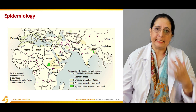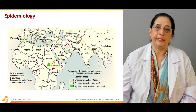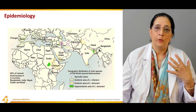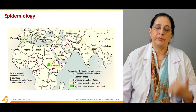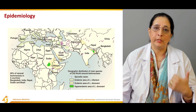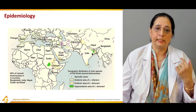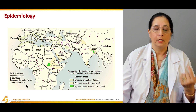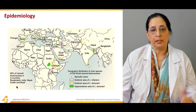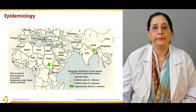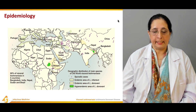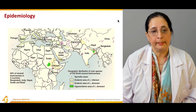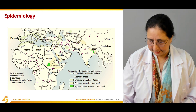Despite this wide distribution, 90% of leishmaniasis cases are concentrated in just five countries: India, Bangladesh, Nepal, Sudan, and Brazil. That is the epidemiology of leishmaniasis.